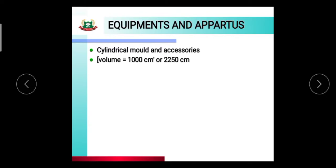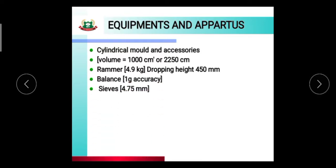Equipment and apparatus: cylindrical mold and accessories with volume equal to 1000 cubic centimeters or 2250 cubic centimeters, rammer 4.9 kg with dropping height 450 mm, balance with one gram accuracy, sieve 4.75 mm, mixing tray, trowel, graduated cylinder 500 ml capacity, and metal containers.